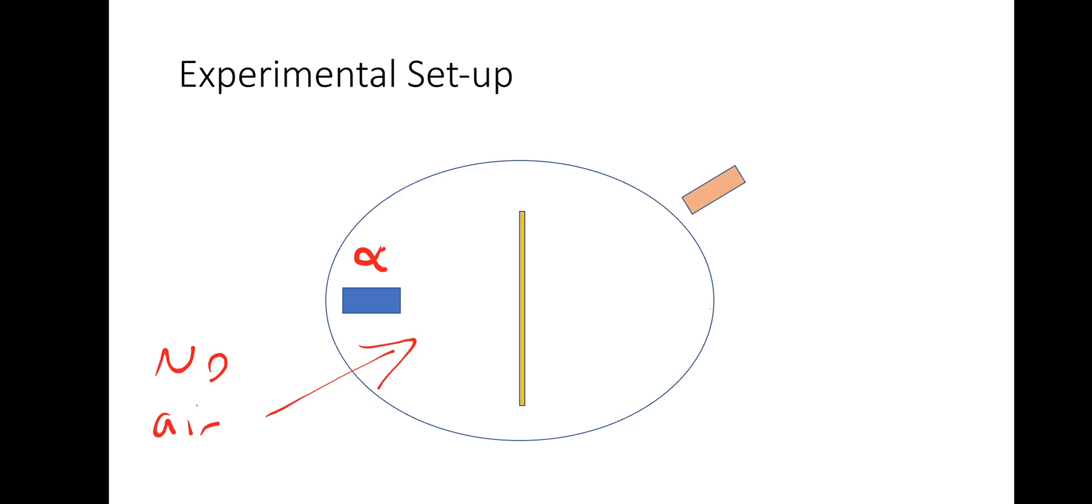So why would we need no air? Well, primarily the alpha particles, which are fired out from the source. If there was air in the chamber, then the alpha particles are so massive, they would interact with the air, and wouldn't actually hit the target. The target is this gold-looking band, this yellow band.